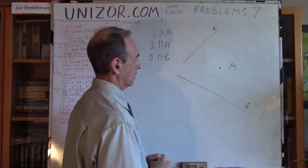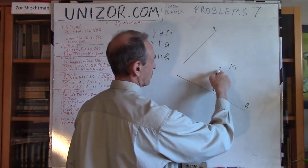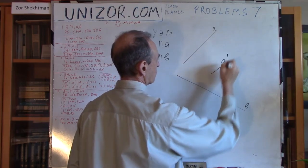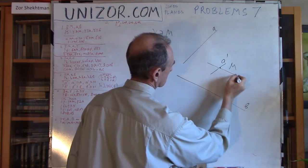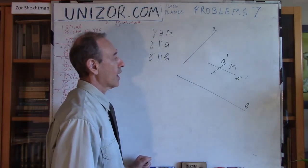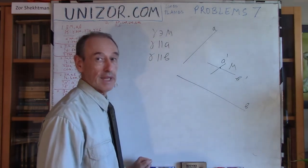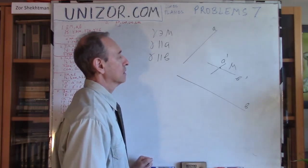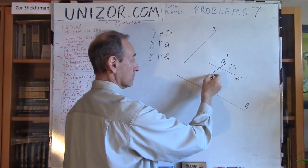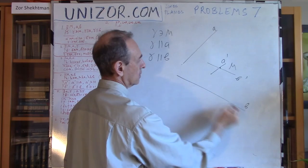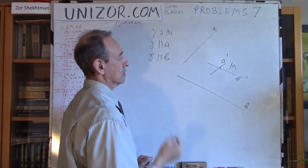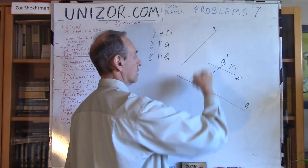How can we do it? That's actually quite easy, because through M we can draw the line parallel to A — call it A' — and draw the line parallel to B — call it B'. Now these two lines, A' and B', intersecting at point M, define the plane. This plane is parallel to A because it contains line A' which is parallel to A, and it's parallel to B because it contains line B' which is parallel to B. So this plane is parallel to both A and B.